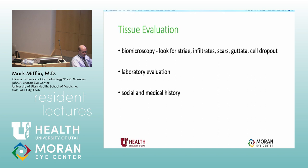When looking at tissue in the eye bank, we look at it with the microscope and then do blood work. The social and medical history is really important. For example, people who have been incarcerated or are very promiscuous — we don't use the tissue. Most of this screening is done via a coordinator over the phone with a family member or physician. In Utah, most people have driver's licenses registered as donors — there's an implied consent law, and consent from the family is not required if the person has signed up to be a donor.